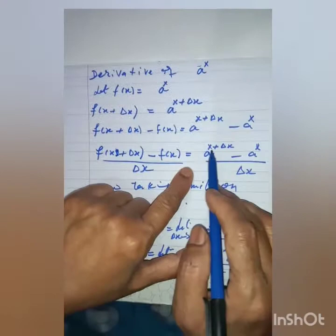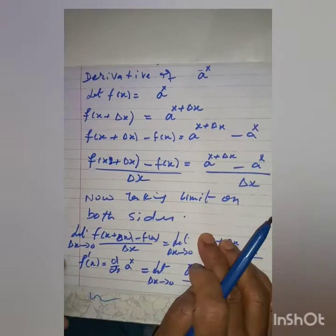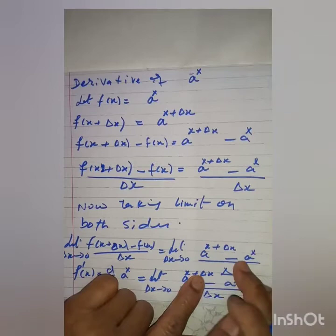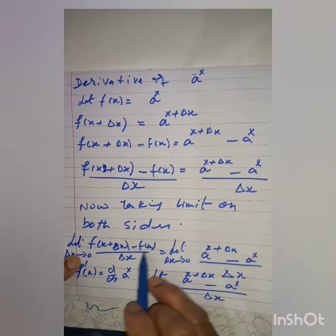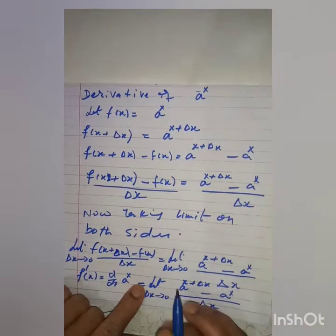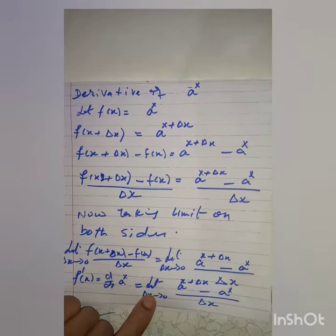Now, taking the limit on both sides, limit as delta x goes to 0, f of x plus delta x minus f of x dividing by delta x will be equal to limit as delta x goes to 0, a to the power x plus delta x minus a to the power x. As you know, limit as delta x goes to 0 of f of x plus delta x minus f of x dividing by delta x is the derivative of f of x, f prime of x, which is equal to d by dx of a to the power x. So d by dx of a to the power x will be equal to limit as delta x goes to 0, a to the power x plus delta x minus a to the power x dividing by delta x.